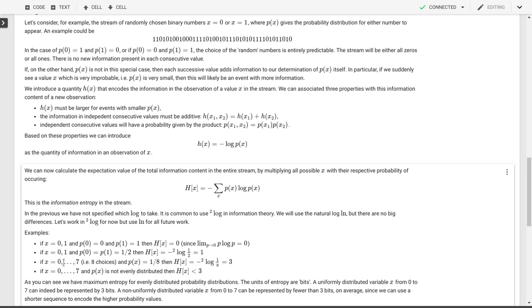If we had values between 0 and 15, so 16 different choices, and each had a probability of 1 over 16, then we would find that the information entropy is 4, not 3, because we need 4 bits to represent those numbers.